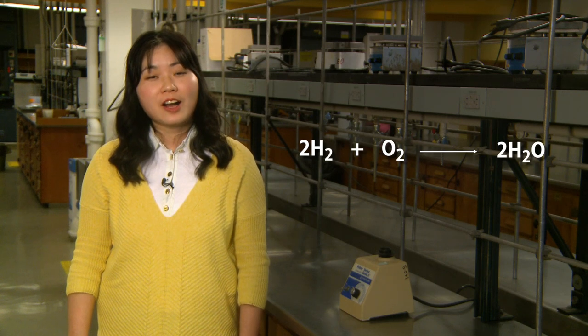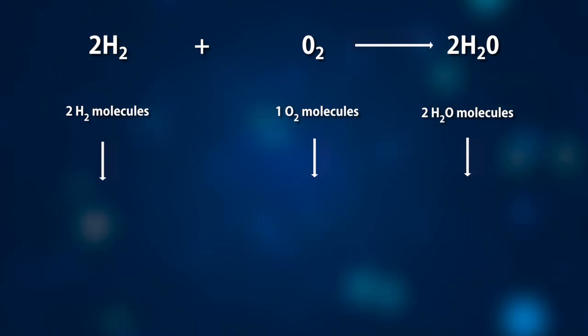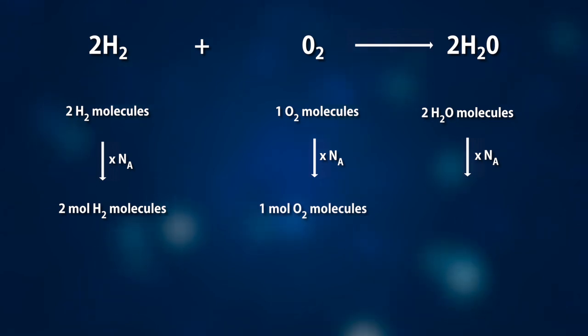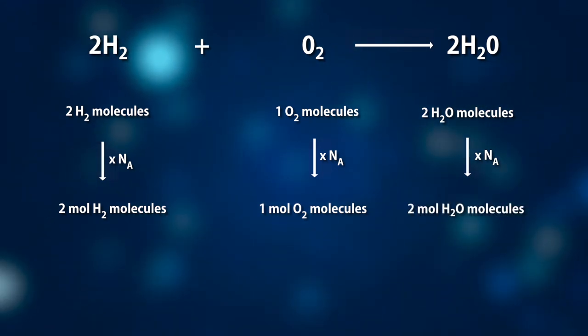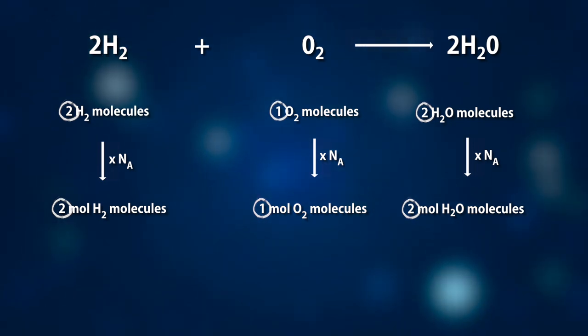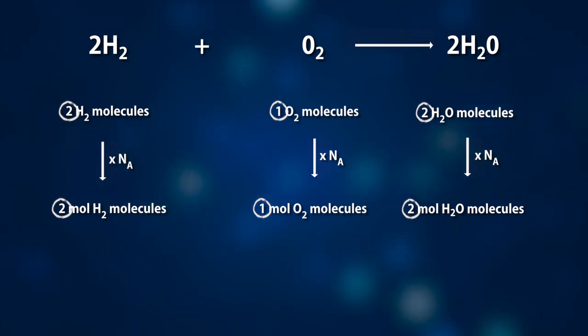If we know the mass of one mole of a substance — just like the mass of the group of 100 beans — then we can translate between the amount of substance in moles and mass. Why is this important? All of us studying chemistry know that chemical equations reflect the quantitative relationship between reactants and products, but the coefficients only show the proportion between the number of particles. For example, this equation tells us that two hydrogen molecules react with one oxygen molecule to form two water molecules. Through the conversion factor Nₐ, the equation also means two moles of hydrogen react with one mole of oxygen to form two moles of water.